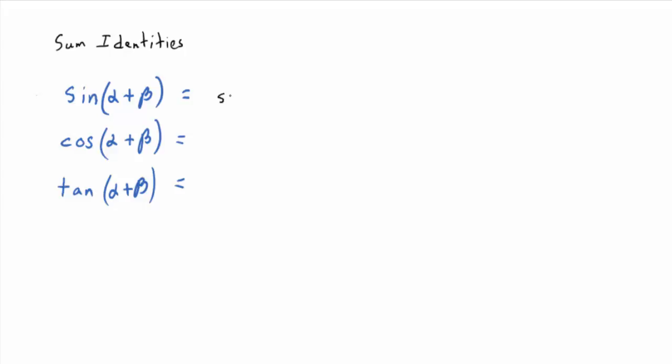What it turns out to equal: it turns out to be sine alpha cosine beta plus sine beta cosine alpha. I like to write it this way because the order goes sine, cosine, sine, cosine — and I just remember to switch the angles around. Your book writes the second term as cosine alpha times sine beta, but that's multiplication so it's okay to switch it around. That's how I remember it.